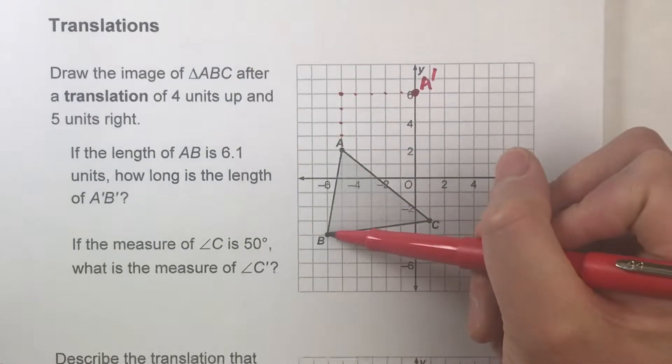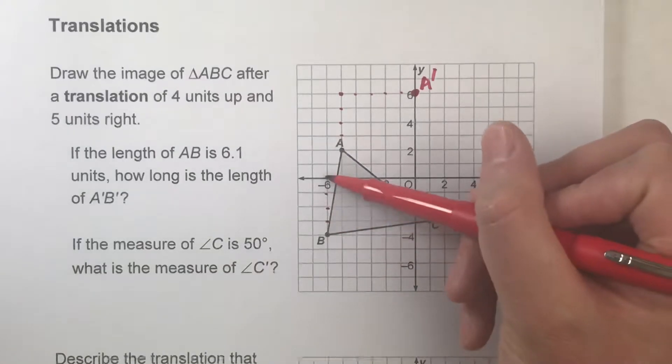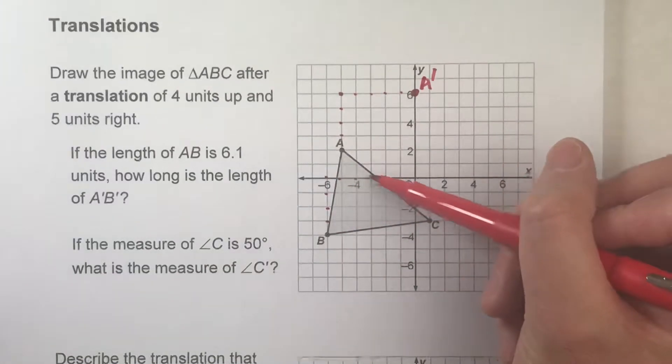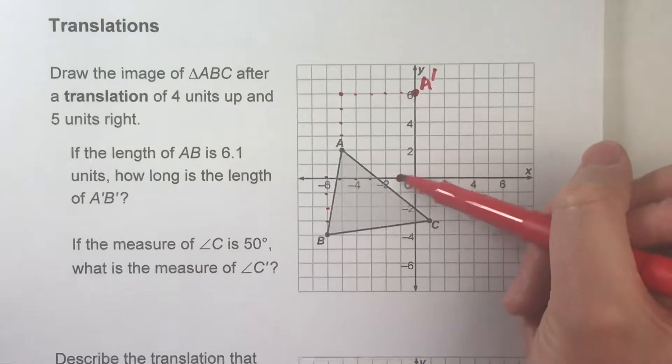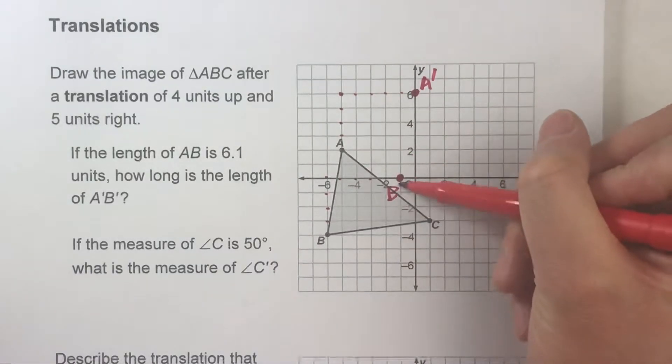Same with B. We're going to go up four—one, two, three, four—and right five—one, two, three, four, five. There's our B prime.